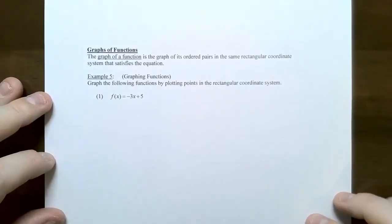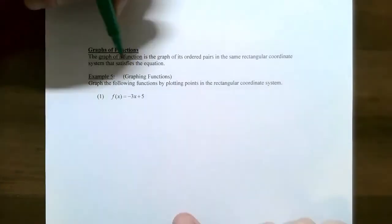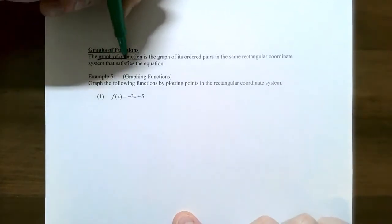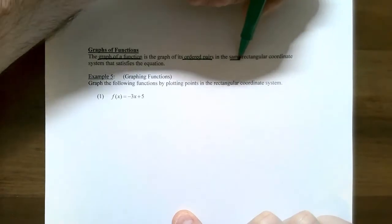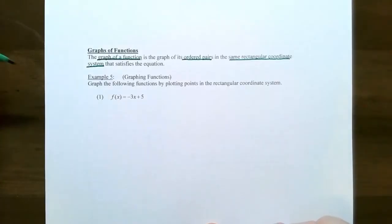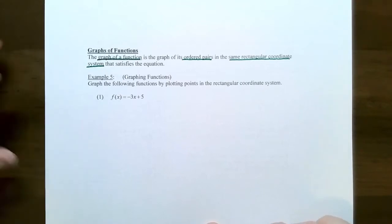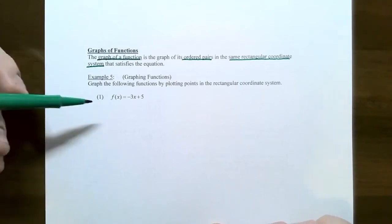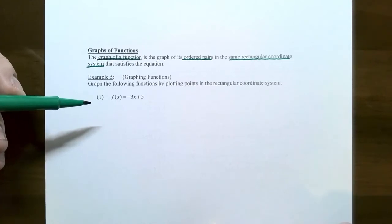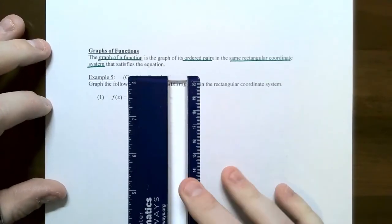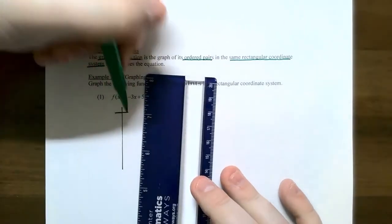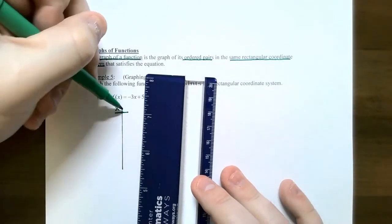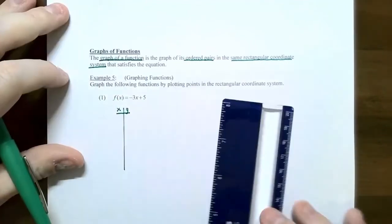The graph of a function is a graph of ordered pairs in the same rectangular coordinate system. Let's look at example five. We're going to graph a couple different functions - graph the following functions by plotting points in the rectangular coordinate system, and our function is f of x equals negative three x plus five. We're going to make an x-y table so that we can plot points, with one column for the independent variable x and one for the dependent variable y.